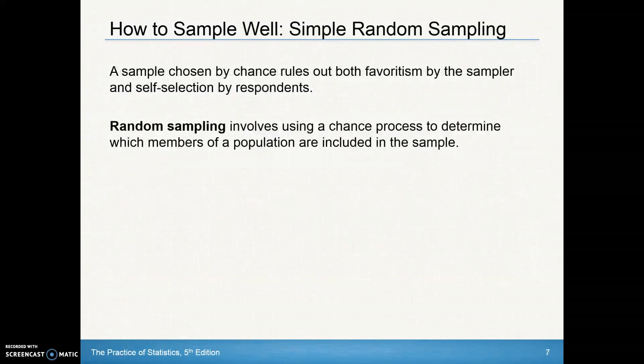So how do we sample well? A sample chosen by chance rules out both favoritism by the sampler and self-selection by respondents. Random sampling is the best way to do that. And that involves using a chance process to determine which members of a population are included in the sample.